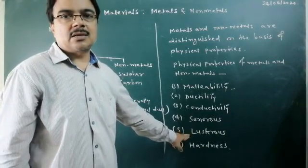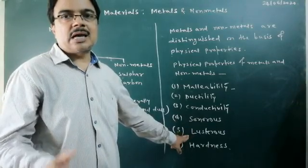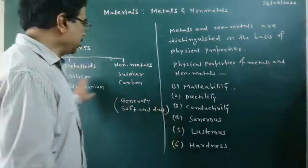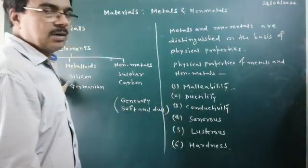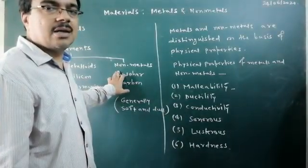So, metals have the lustrous property. Metals are lustrous, whereas non-metals are not lustrous; they are dull in appearance.